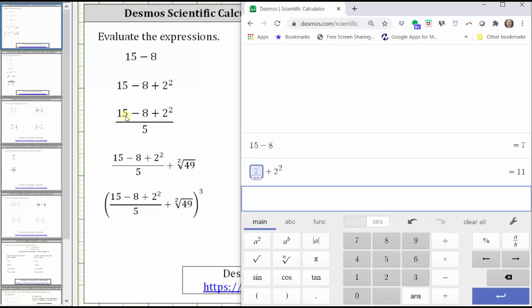The second expression is equal to 11. For the third expression, we have the quantity 15 minus 8 plus 2 squared divided by 5, which means this expression is equal to the value of the previous expression divided by 5.